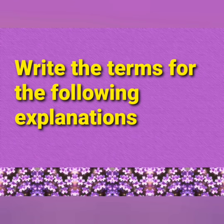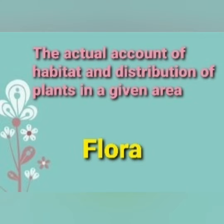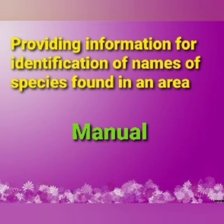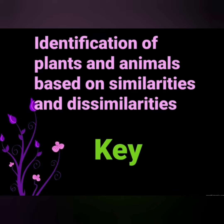Write the terms for the following explanations. The taxonomical aid that is a storehouse of collected plant specimens pressed and preserved on sheets is herbarium. The actual account of habitat and distribution of plants in a given area is flora. Providing information for identification of names of species found in an area is the manual — a taxonomical aid. Monographs contain information on any one taxon. Key is the taxonomical aid used for identification of plants and animals based on similarities and dissimilarities.